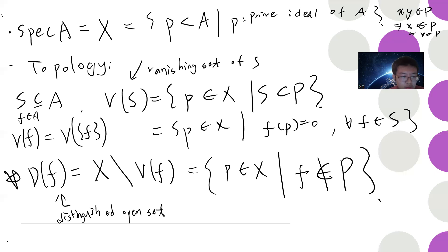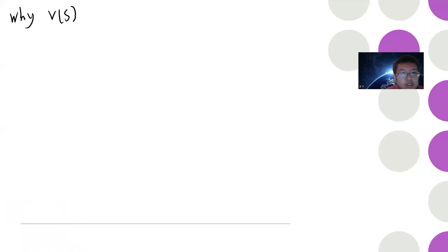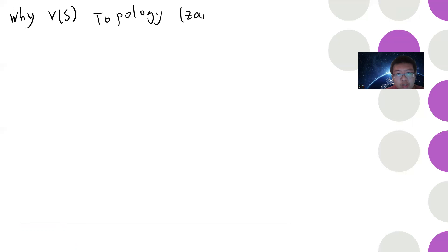Now I want to give the topology. As in algebraic geometry for varieties, I declare V(S) to be closed. So however you give me a set S, I say V(S) is closed. The problem is we need to check this actually defines a topology. This is called the Zariski topology.